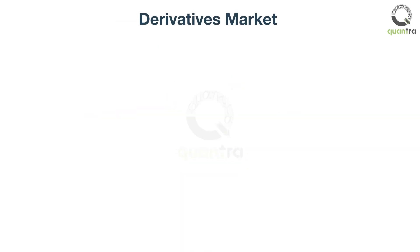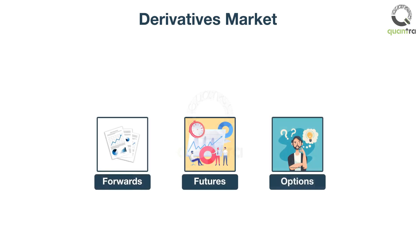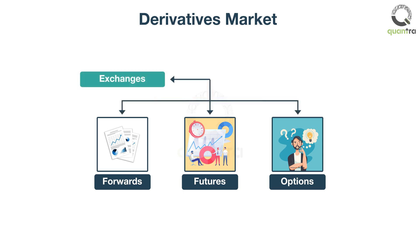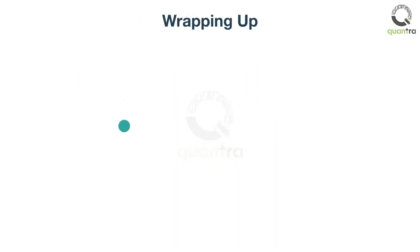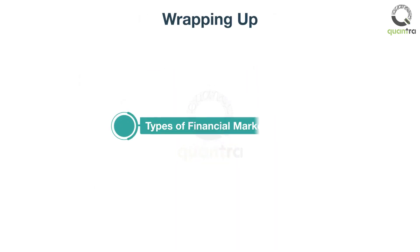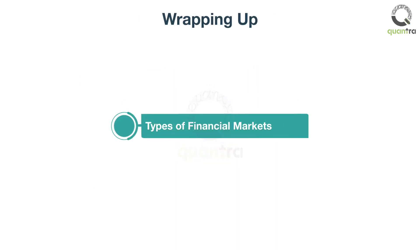A derivatives market is a market where derivative products such as forwards, futures, options, and so on are traded. Transactions for derivative products happen on exchanges as well as over-the-counter. That is all for this video. You got introduced to various types of financial markets.